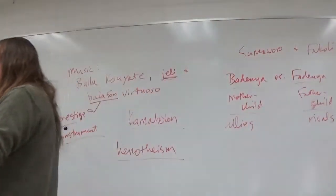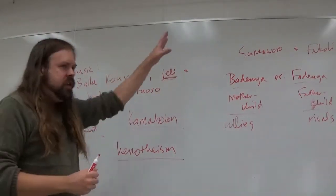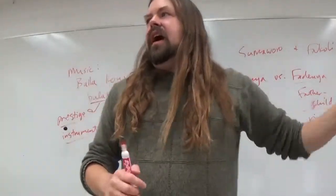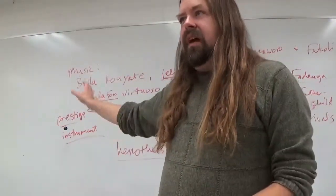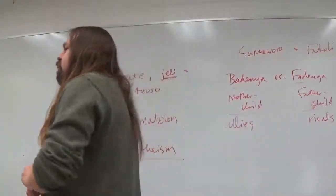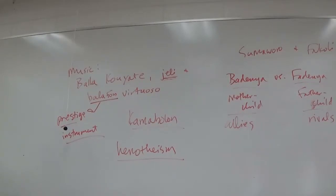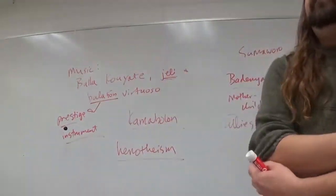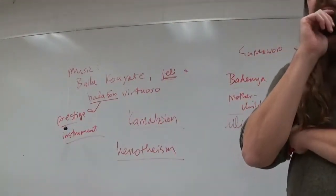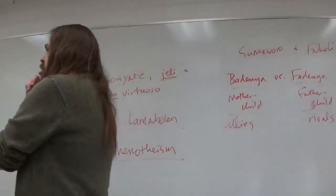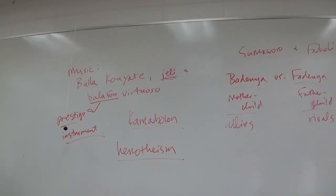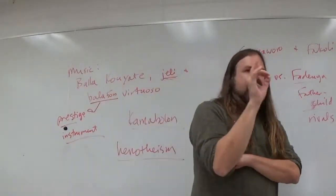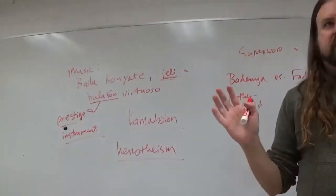So because Fakoli's mother and Sumo-waro have the same mother, they should ideally be allies. They're supposed to work together. That's why Fakoli initially won't join Sunjata's army. It's like, no, this particular kinship tie is too important, is too strong. I have to fight with my uncle rather than with you. But Sumo-waro then goes and violates that kinship tie by taking away Fakoli's wife.